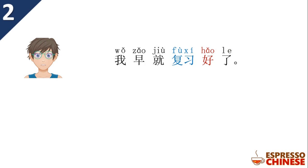我早就复习好了。 Again, 早就 means 'long time ago.' The 就 here is for emphasis on 'long time.' You put 好 after 复习 as a complement of result to show you have finished doing something. So: long time ago, I have already finished my reviewing, Mom.